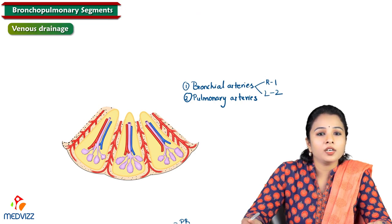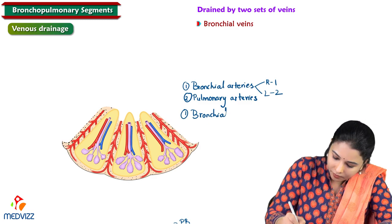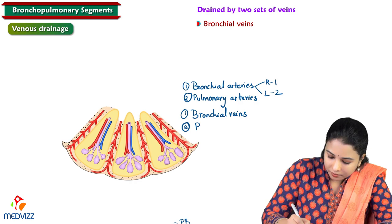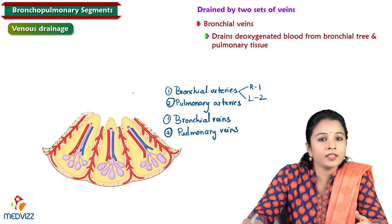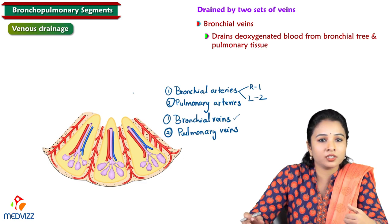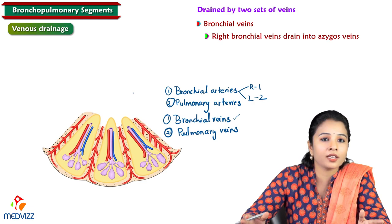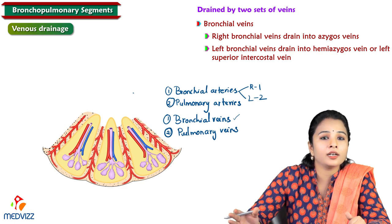Venous drainage from the lungs is also by two sets of veins: bronchial veins and pulmonary veins. The bronchial veins drain deoxygenated blood from the bronchial tree, with two bronchial veins on each side. The right bronchial vein drains into the azygos vein, whereas the left drains into the hemi-azygos and left superior intercostal veins.